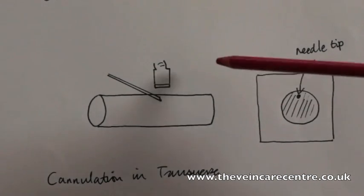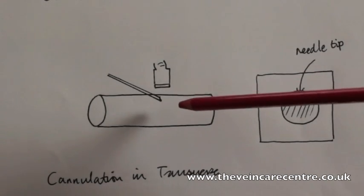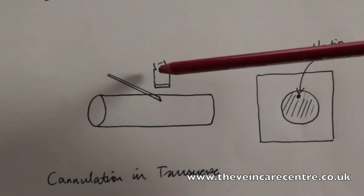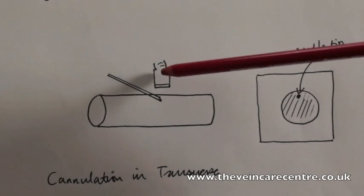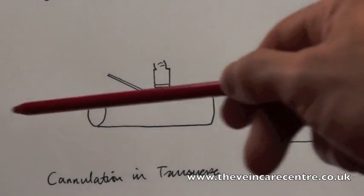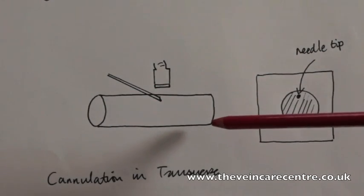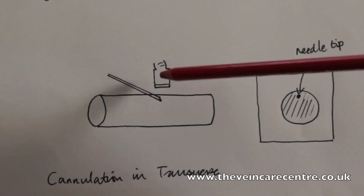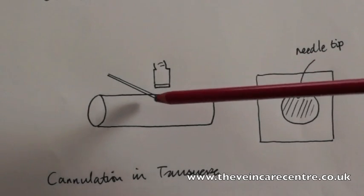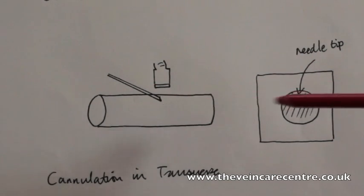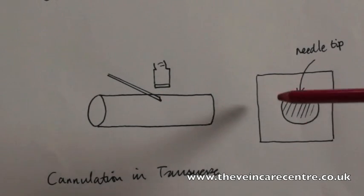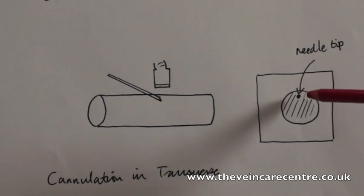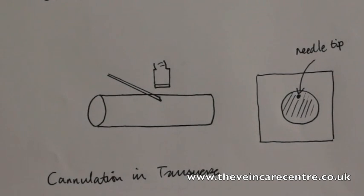Here we can see the blood vessel being cannulated with the transducer in transverse section. The long axis of the transducer is at 90 degrees to the long axis of the blood vessel, and the probe is here directly over the needle tip as it's entering the blood vessel. On the ultrasound, we can see the blood vessel as a circle, and the tip of the needle appears as an echogenic point within the lumen of the blood vessel.